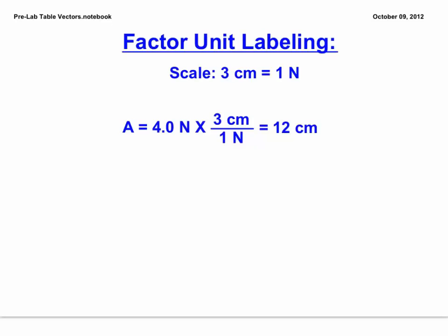So to do so, you'll need to use some factor label. By simply multiplying the original force by your centimeter to newton ratio that you've chosen, you should be able to figure out how long exactly each vector should be. In this case, we've chosen three centimeters per newton, because three times four gets me a twelve centimeter vector.